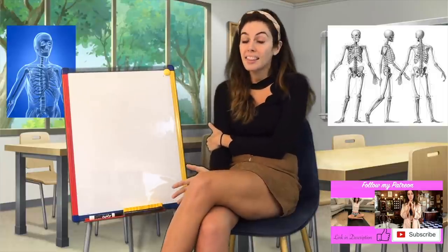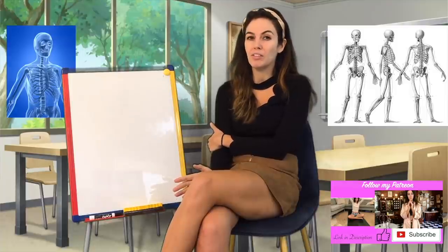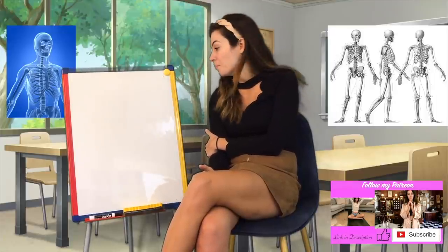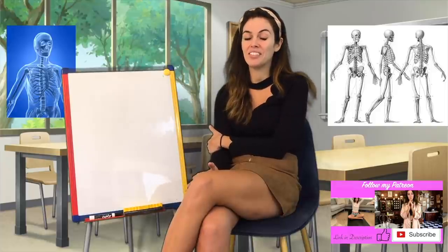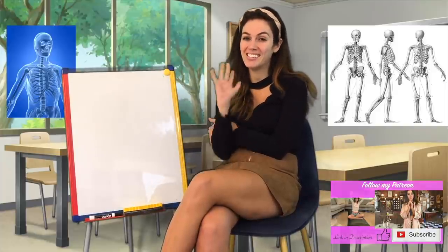And then a gliding joint — think of your ankle, knuckles, and wrist. It allows a bone to slide over another, letting you bend and flex as well as make limited side-to-side motions. That is all I have for today's lesson on the skeletal system. I hope that you enjoyed this lesson. Goodbye!